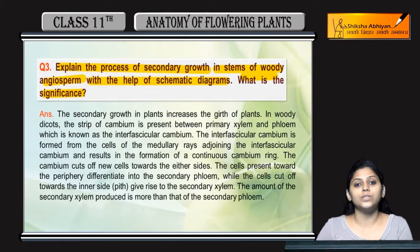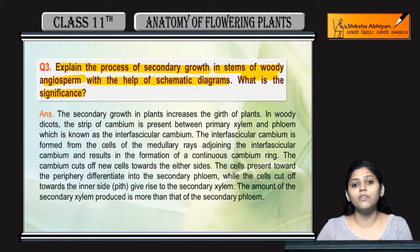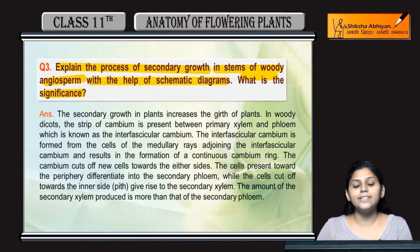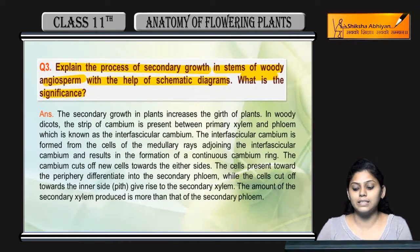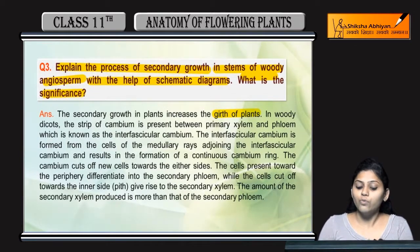सबसे पहले secondary growth क्या होती है? हमने पढ़ा है that secondary growth lateral growth होती है with the help of lateral meristem. Lateral meristem में होती है। Lateral meristem में lateral growth हो रही है — उससे क्या होता है? Girth of plant increases। Woody dicots में होते हैं।